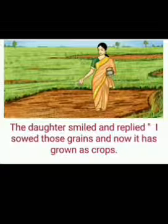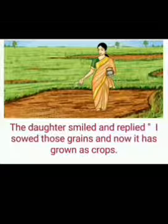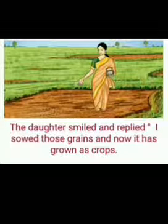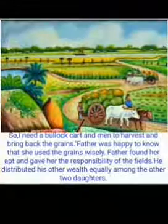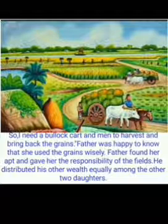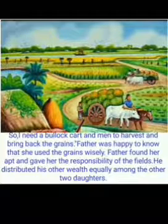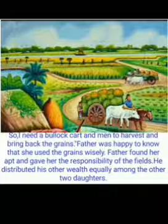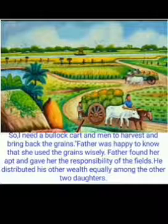What did she do with the grains? She used those grains in a very useful way — she sowed all those grains for agriculture purposes, so that the grains grew as crops. You know about crops. So she needs a bullock cart and men to harvest the crops and bring back the grains. The father was happy to know that she used the grains wisely. The third daughter is very wise — wise in the sense that she used the grains in a very useful way.